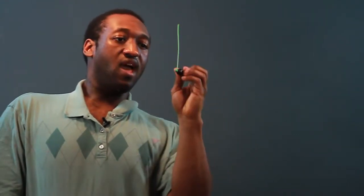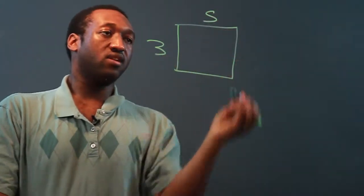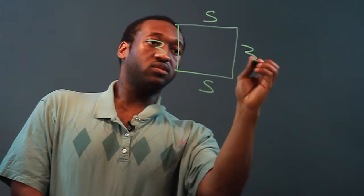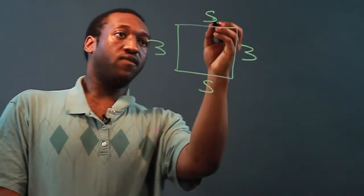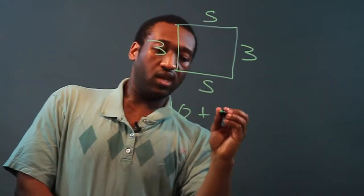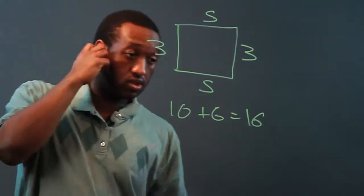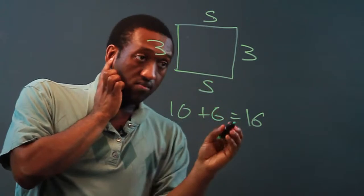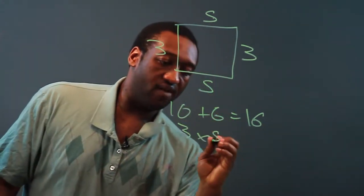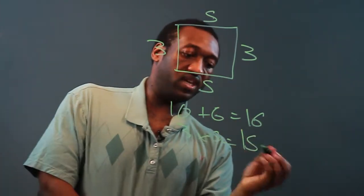Let's say I have a rectangle, and let's say it's 3 by 5. So the other side would be 5, and the other side here would be 3. 5 plus 5 is 10, 3 plus 3 is 6, and 10 plus 6 is 16. So the perimeter is 16, and the area — which I would get by length times width for a rectangle — is 15 square units.